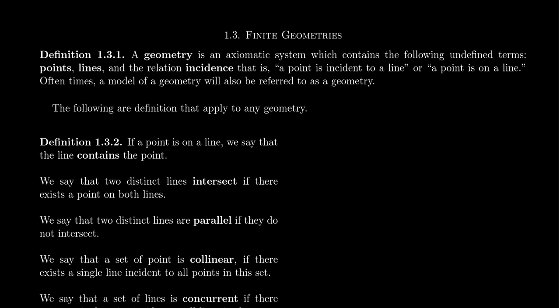When we talk about a model of a geometry — because geometry, as we've defined it, is a theory, an axiomatic system — we often refer to models of the geometry as a geometry itself. We don't usually talk about geometry theory the same way we talk about group theory. In abstract algebra, a group is a model of group theory: a binary operation that's associative, has identity, and has an inverse. Similarly, the word geometry is used to mean both the theory itself and models of geometry are called geometries.